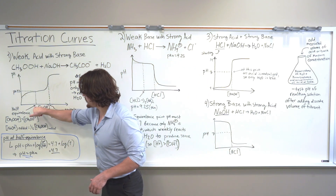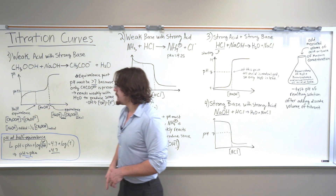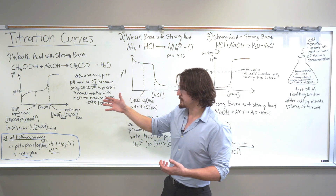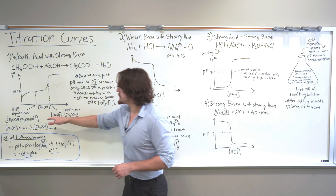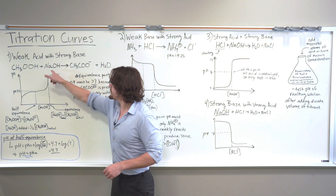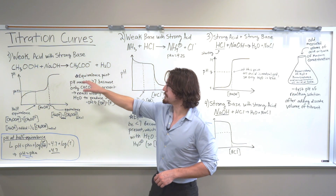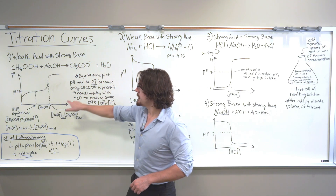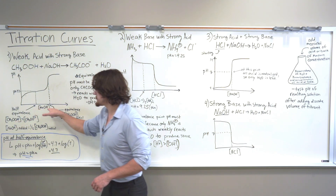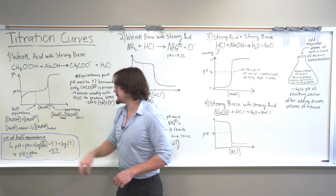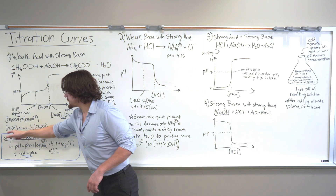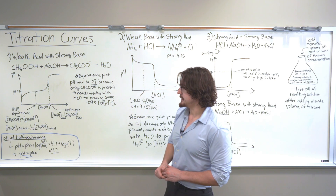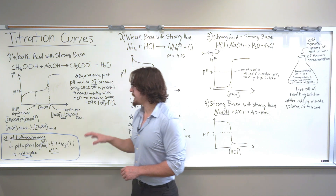So here we have two points. The first point is the half equivalence point. This is the point at which the concentration of the original weak acid is equal to the concentration of the conjugate base. Enough sodium hydroxide has been added to convert half of the initial starting concentration into its conjugate base, making them equal at this point. So the amount of titrant added — in this case sodium hydroxide — is going to be one half the initial concentration of the acetic acid. That's the half equivalence point.